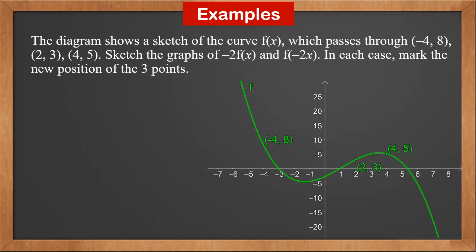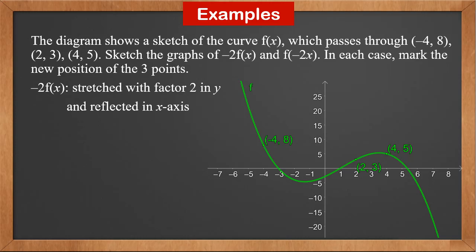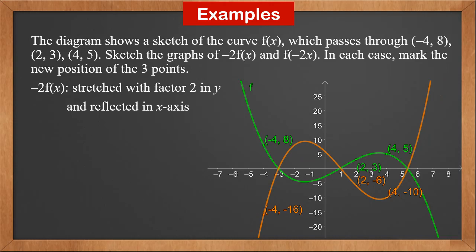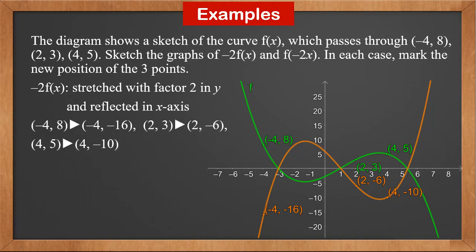The diagram shows a sketch of curve f(x) passing through (−4, 8), (2, 3), and (4, 5). Sketch the graphs of −2f(x) and f(−2x), marking the new positions of the three points. In −2f(x), the minus sign reflects the graph in the x-axis and the 2 stretches it with factor 2 in the y-direction. For the same x value, the y value is multiplied by −2, so (−4, 8) → (−4, −16), (2, 3) → (2, −6), and (4, 5) → (4, −10).